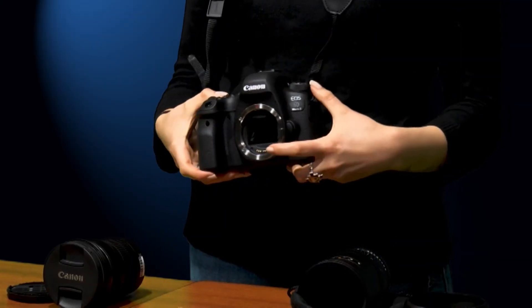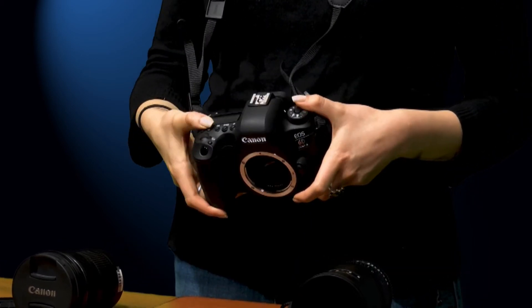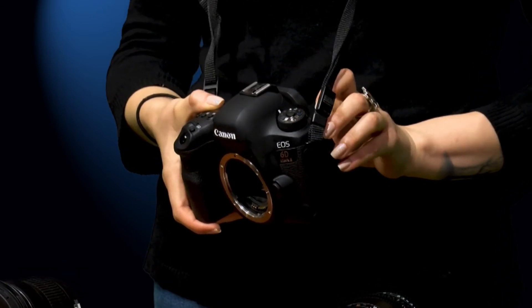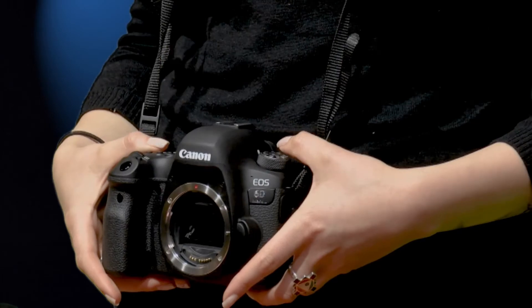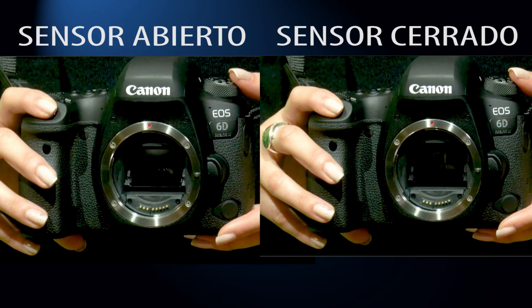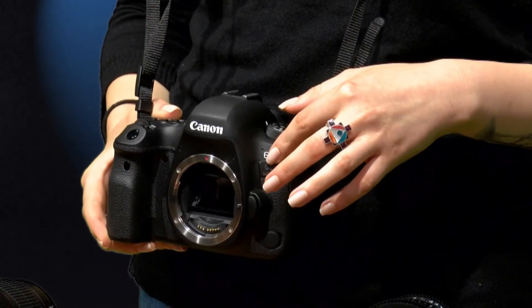Segundo está el cuerpo. En el interior encontramos el espejo, donde se refleja la imagen y la proyecta a un pentaprisma que podemos ver por el visor óptico. Si levantamos ese espejo nos encontraremos con el sensor, la parte más importante de nuestra cámara. Delante del sensor encontramos el obturador, que es una cortina que se abre y permite el paso de la luz. Los diales o ruletas nos permiten controlar el diafragma y el obturador.